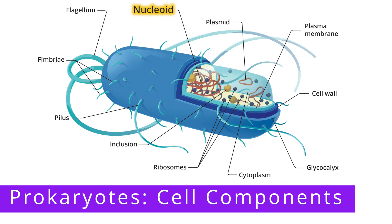The nucleoid is the region within the prokaryotic cell that contains the cell's genetic material. As a reminder, prokaryotic cells contain a singular circular chromosome that is not bound by a nuclear membrane.